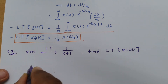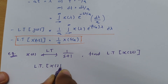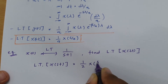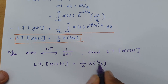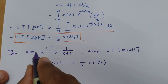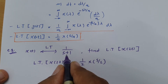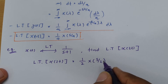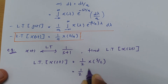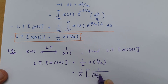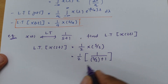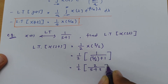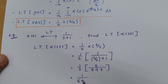Now, the Laplace transform of x(2t) — as per the time scaling property with a = 2 — is 1/2 · X(s/2). We know X(s) = 1/(s+1), so replacing s with s/2 gives X(s/2) = 1/(s/2 + 1). Therefore the result is (1/2) · 1/(s/2 + 1). Taking the LCM, 2 appears in the numerator and gets cancelled, giving us 1/(s+2). So this is how we can easily simplify problems based on Laplace transform using the time scaling property.